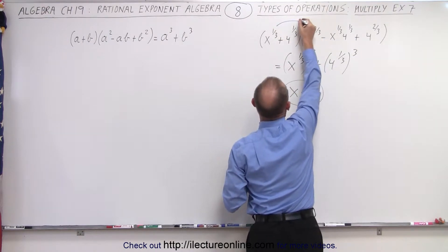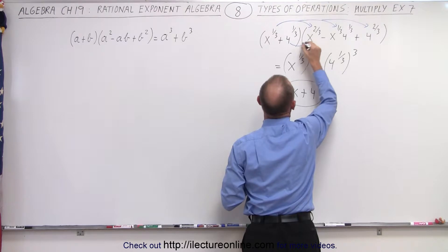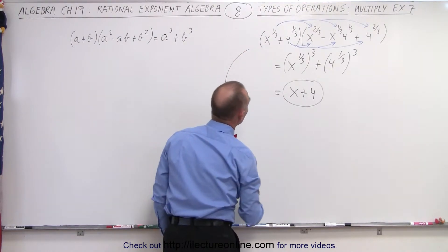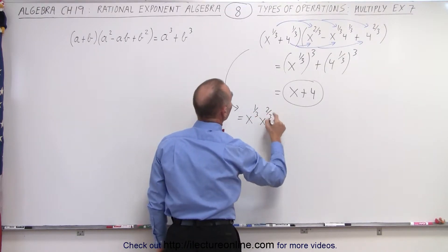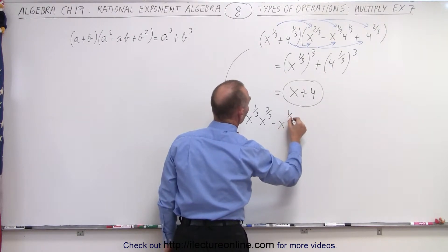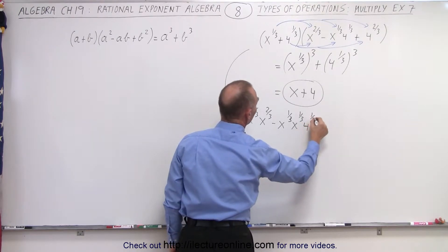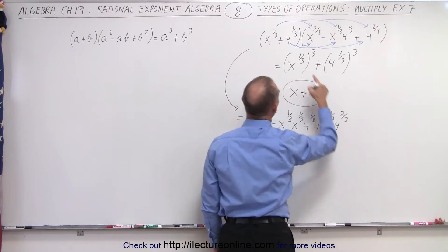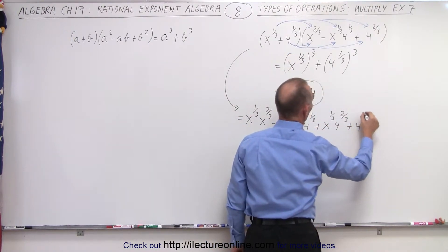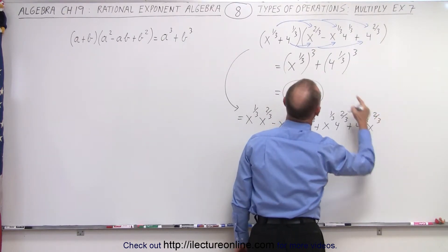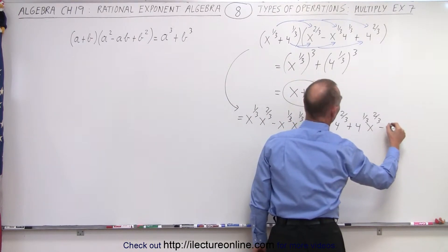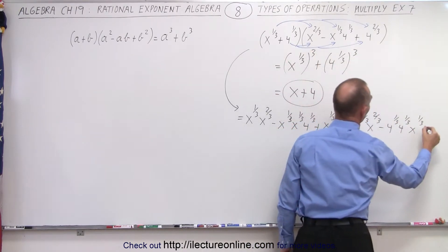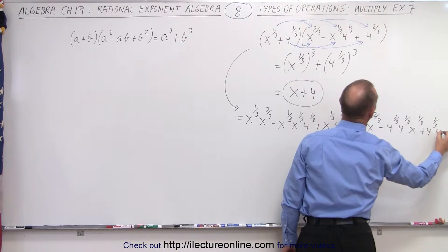We take the first term and multiply it times each of the terms in the trinomial, then take the second term and again multiply it times each of the terms in the trinomial. So we have: x to the one-third times x to the two-thirds, minus x to the one-third times x to the one-third times 4 to the one-third, plus x to the one-third times 4 to the two-thirds, plus 4 to the one-third times x to the two-thirds, minus 4 to the one-third times 4 to the one-third times x to the one-third, plus 4 to the one-third times 4 to the two-thirds.